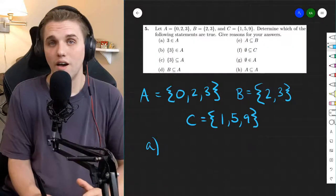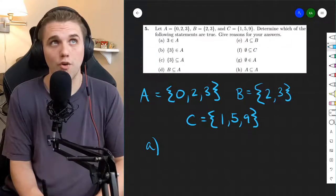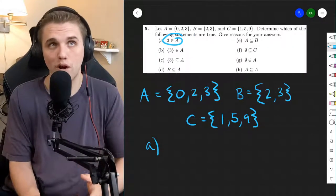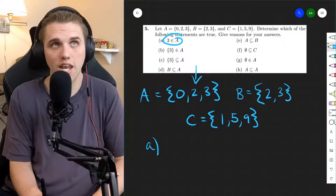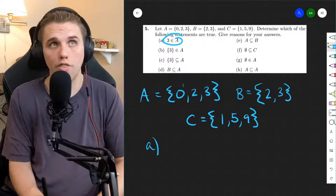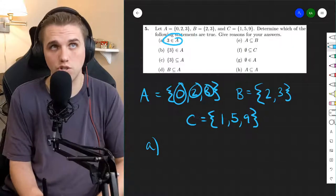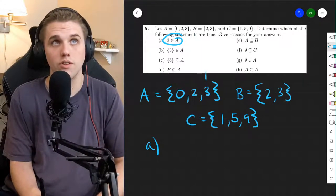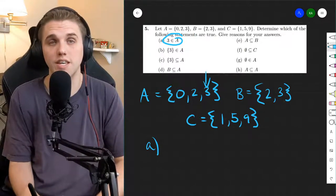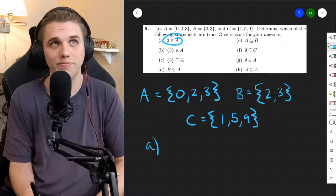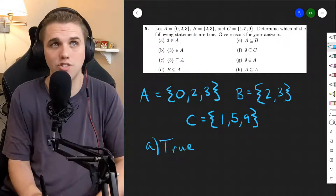Let's start with part A. So for the first problem, we're wondering if three is a member of A. So what is in A specifically? Well, three objects: zero, two, and three. So yes, three is in A. So A is true.